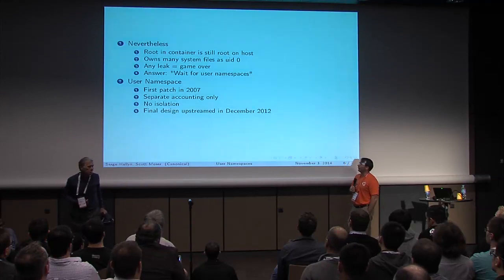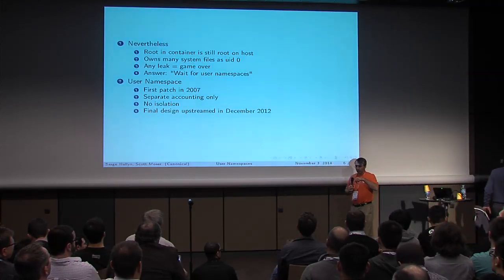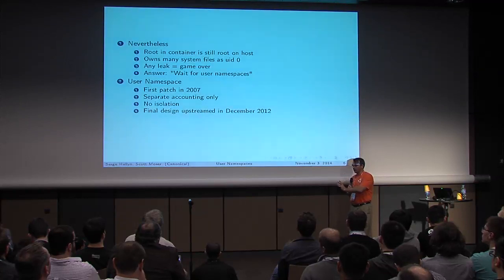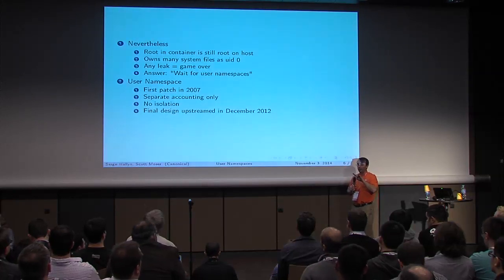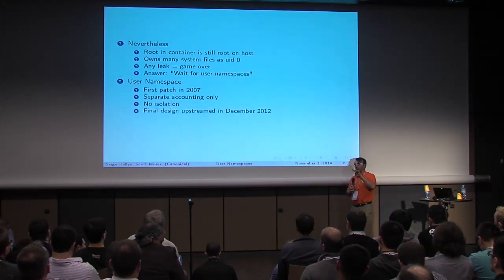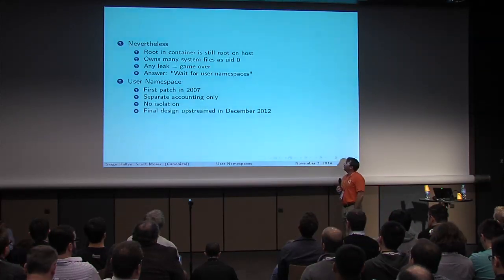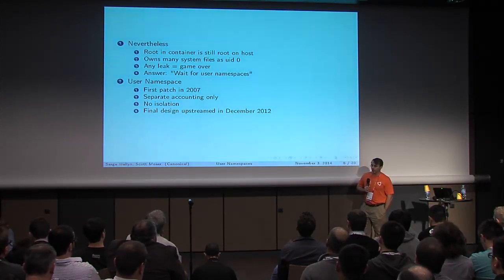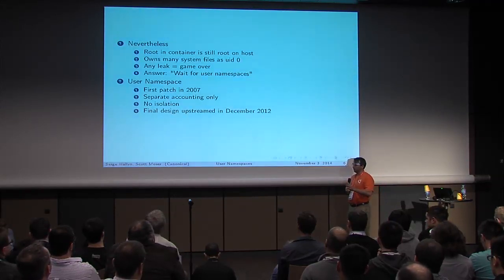The first user namespace patch was introduced in 2007, but all it did was give you separate accounting for the same user ID in multiple namespaces without providing isolation or security guarantees. If a file was owned by user ID 1000, then user ID 1000 in any user namespace owned that file. You couldn't segregate containers that way. Many years of prototypes followed, trying to find a clean way to provide real isolation.